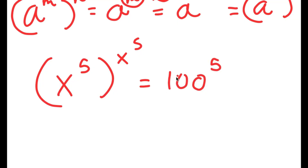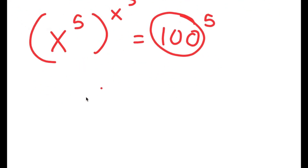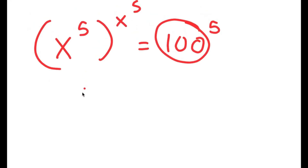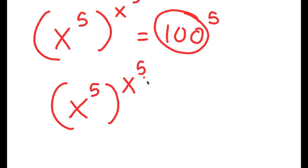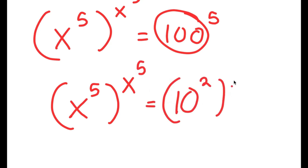From here, I'm going to rewrite 100 as 10 squared. So now I get x to the power of 5 to the power of x to the power of 5, is equal to 10 squared to the power of 5.